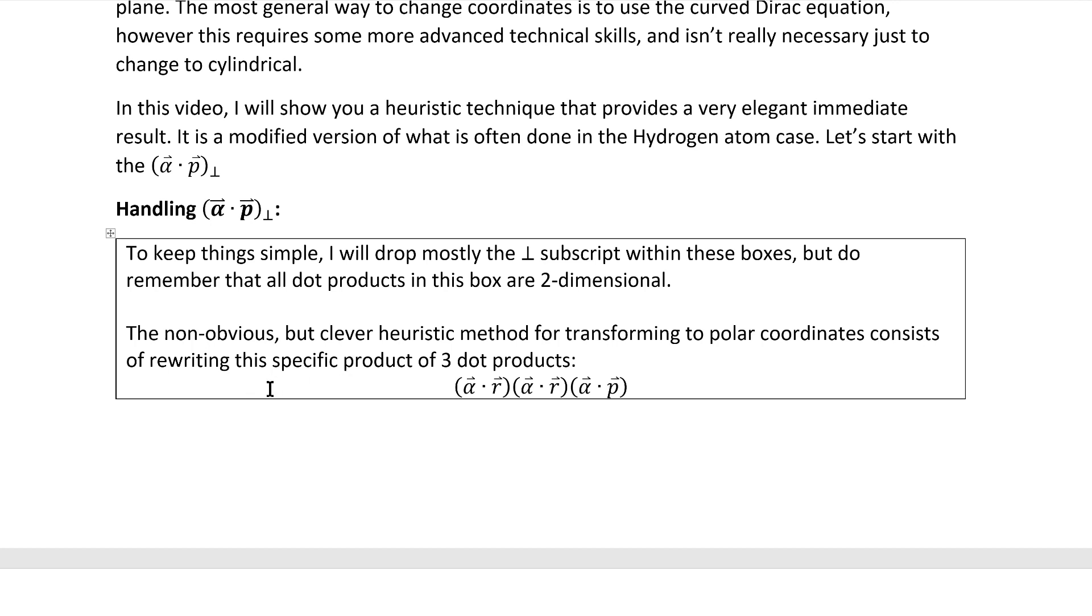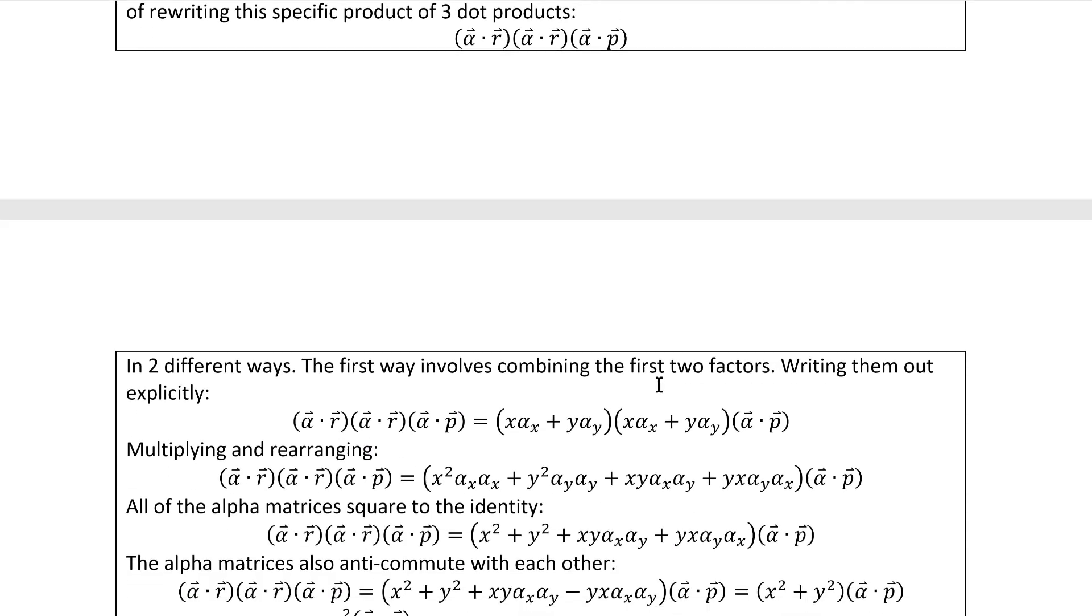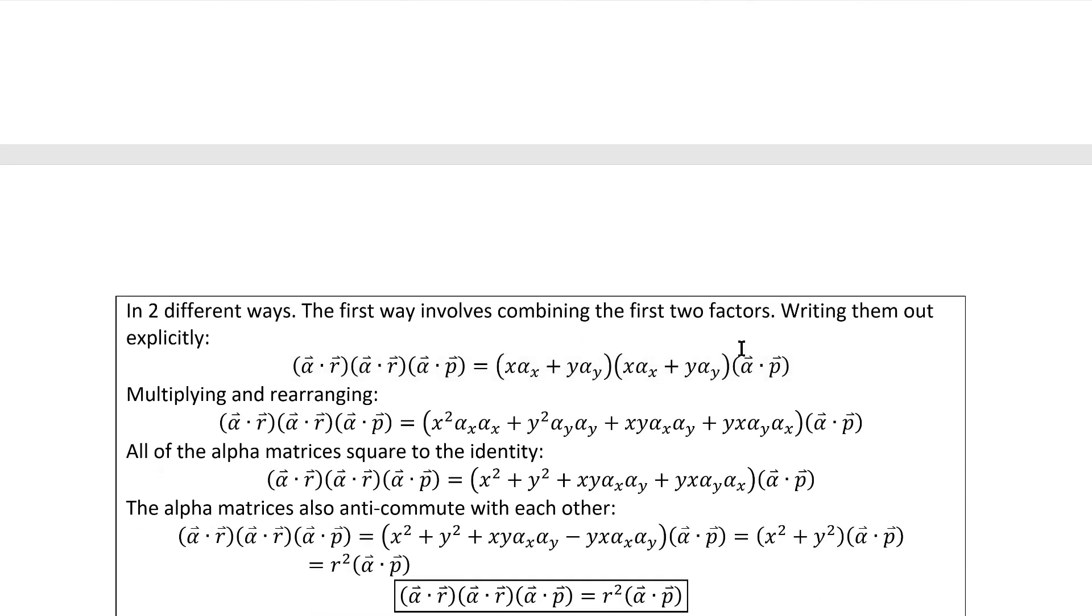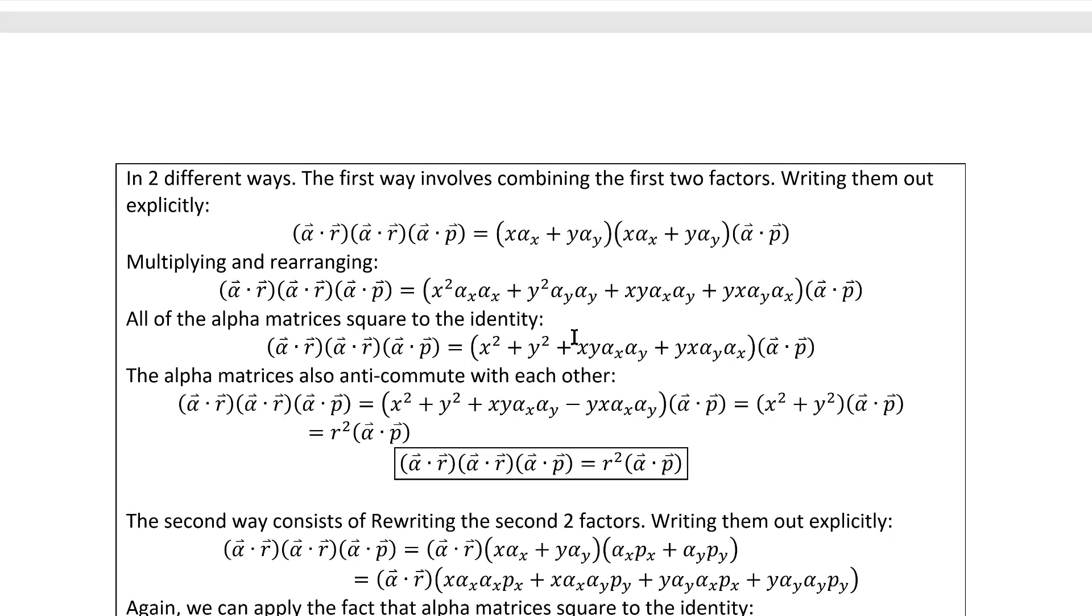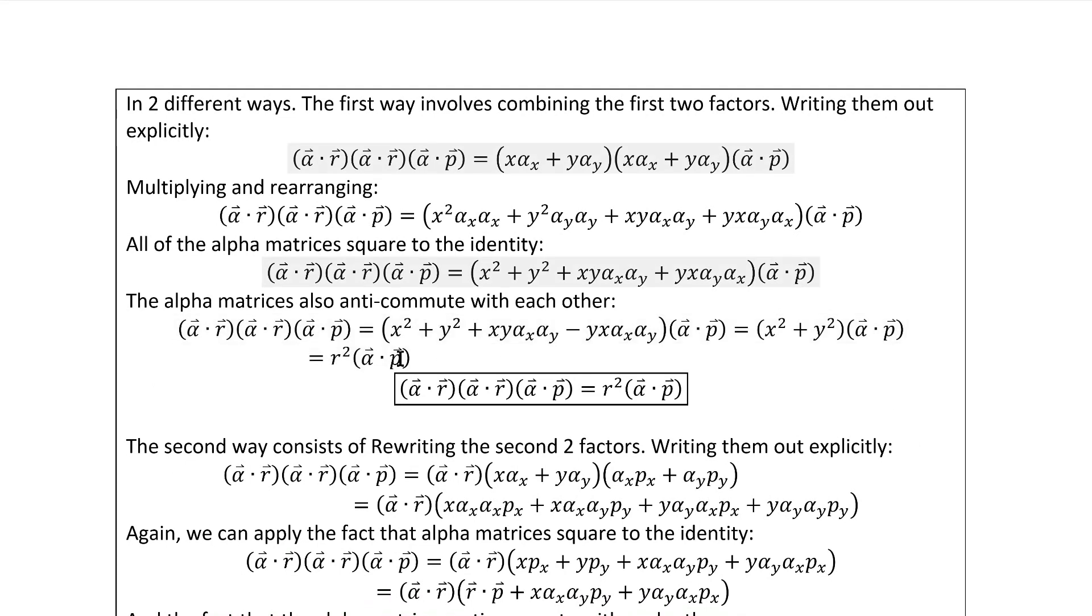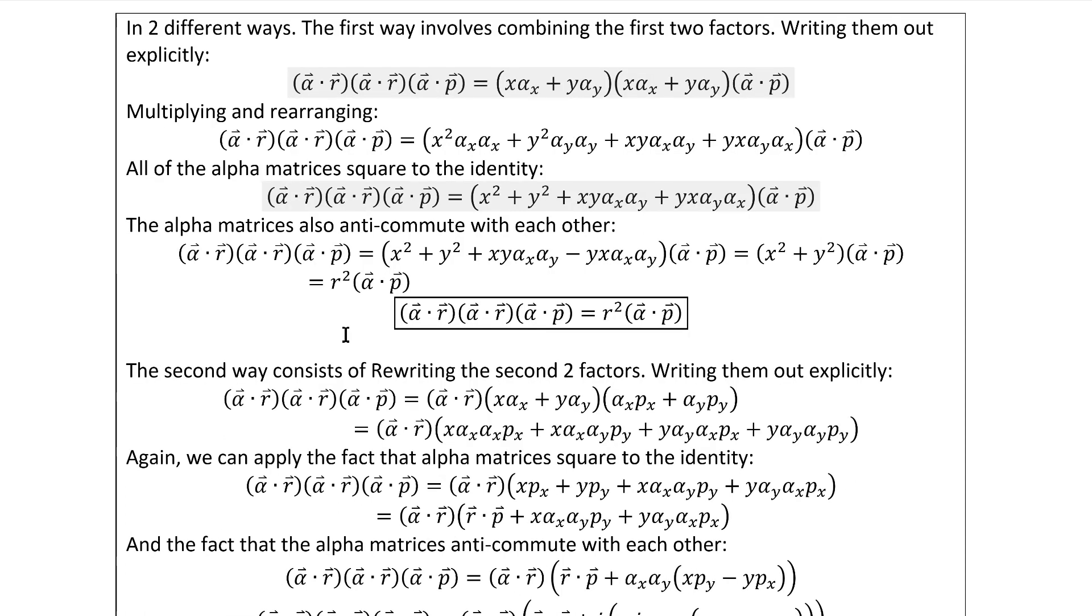The non-obvious but clever heuristic method for transforming to polar coordinates consists of rewriting this particular product of three dot products in two different ways. The first way involves combining the first two factors. Writing them out explicitly gets us this here. Multiplying and rearranging gets us this immediately. Now we can remember that the alpha matrices square to one and also anti-commute with themselves, which leaves us with this result here, ultimately, once we do a little simplification. To summarize, we've gotten this formula from the first rewrite.